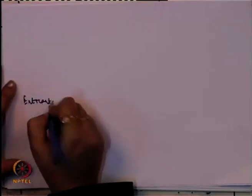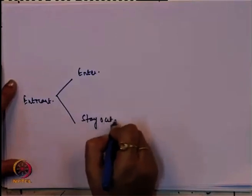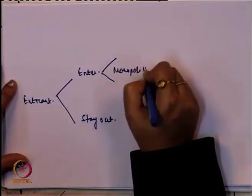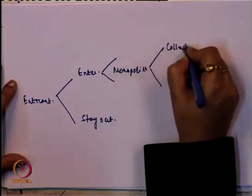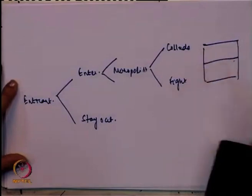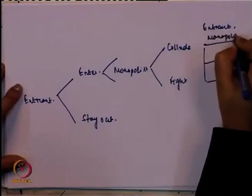Before going further, this is also a type of game. We will see what the game tree looks like here because this is a sequential game — and in this case, how the game tree looks. This is for the entrant; it has two options: one is enter, another is stay out. If it is enter, then the existing monopolist has two options: one is collude, another is fight.